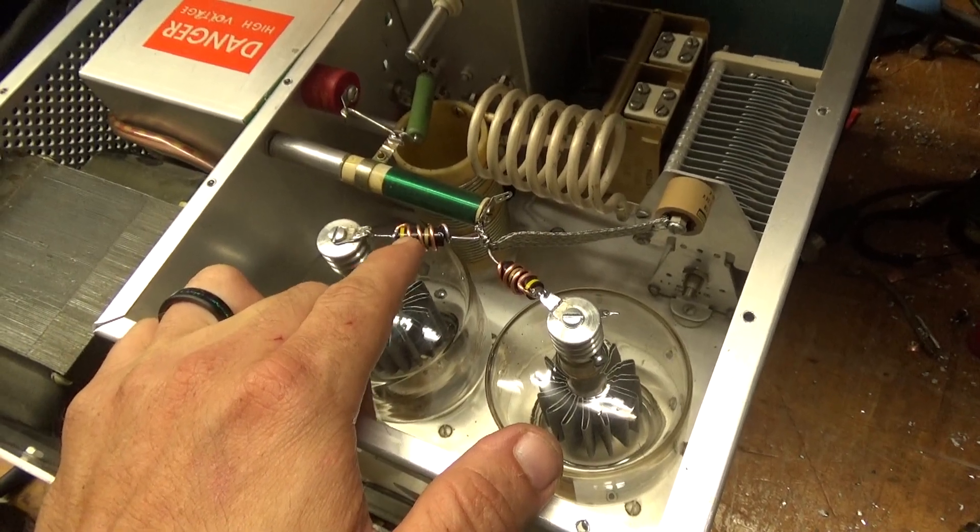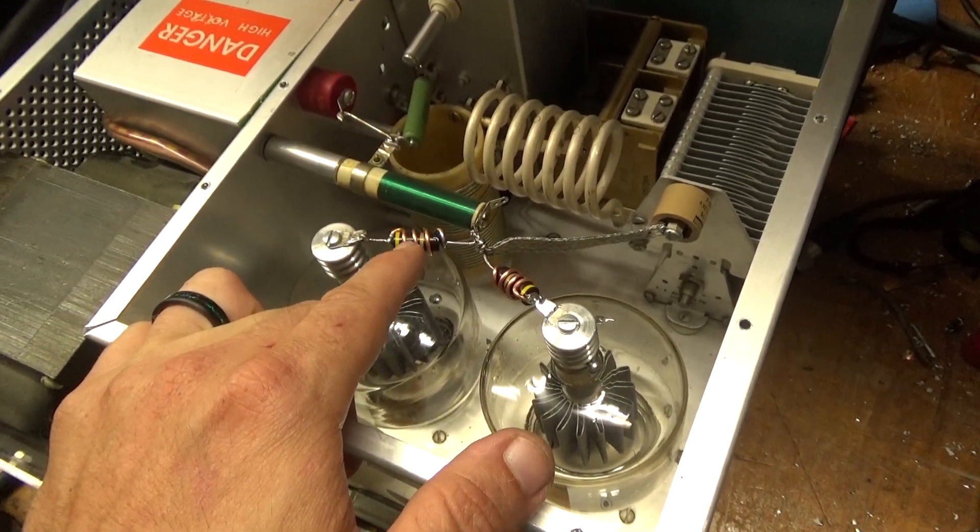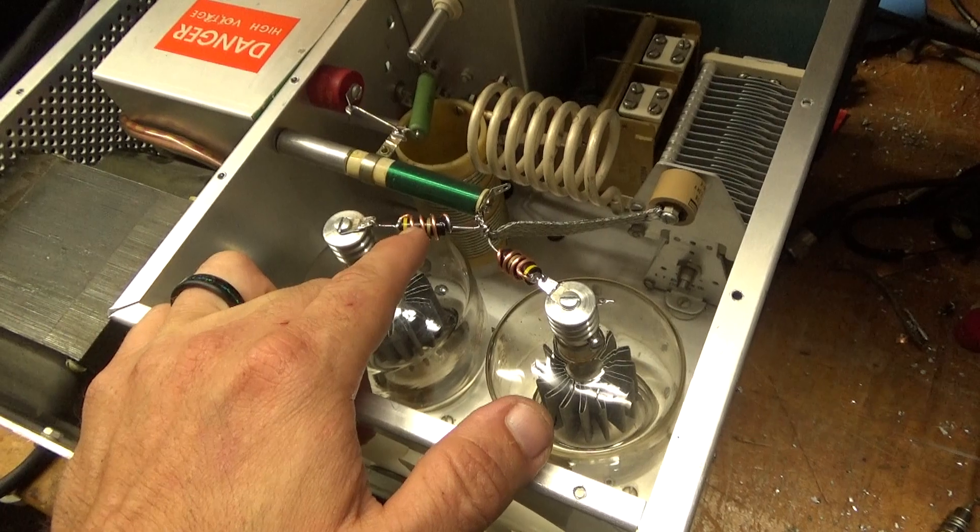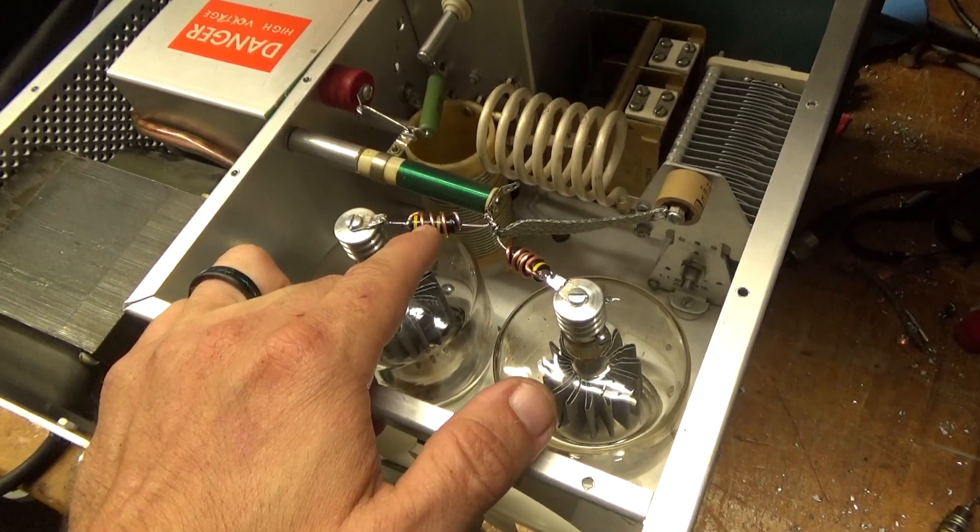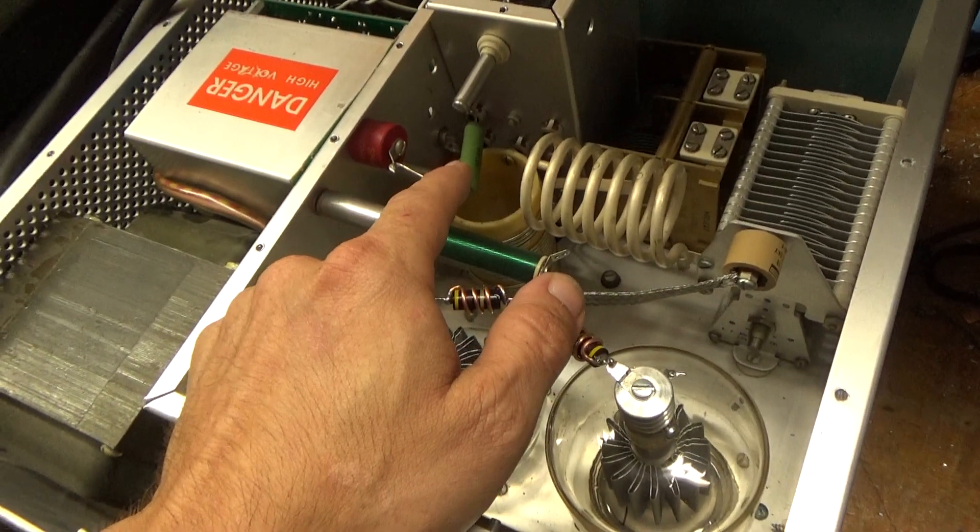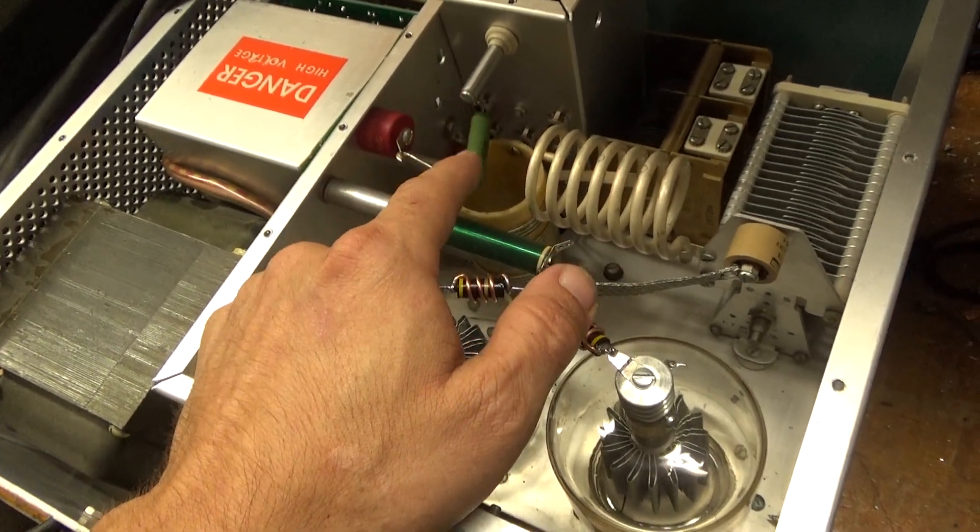Allen-Bradley resistors in, 2-watt. I think they're 48 ohm, 47 or 48 ohm, one or the other. I installed the glitch resistor.